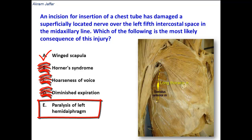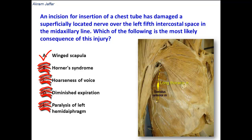Paralysis of the left hemidiaphragm would indicate injury to the phrenic nerve, but the phrenic nerve is a deep nerve located inside the thoracic cavity, not on the thoracic wall. It is unlikely — actually, there is no real possibility — that the phrenic nerve would be damaged by such a procedure.